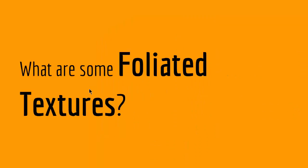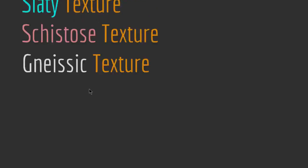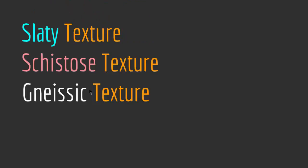What are some foliated textures? We have three types of foliated textures: slaty textures, schistose textures, and gneissic textures. Let's look at each of these in more detail.